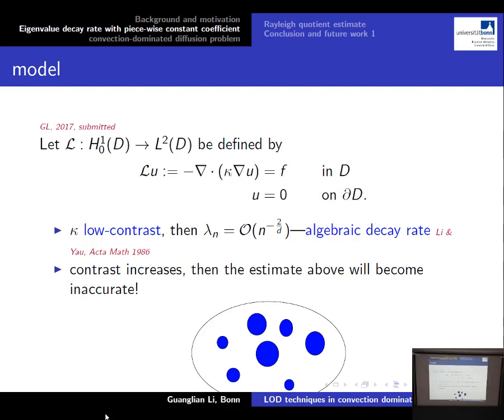Let L be an elliptic operator with piecewise constant coefficient as depicted: the background has value equal to 1 and the dark region has value equal to eta_i for i equal to 1 to m, where m is the number of inclusions. If kappa has no contrast, we know the eigenvalue decay rate of the inverse of this operator is order n to the negative 2 over d, with d as the dimension of the domain. However, if the contrast increases, this estimate can become inaccurate.